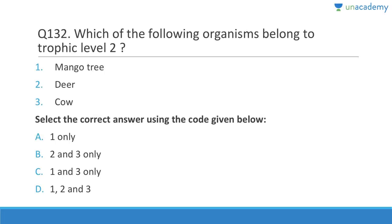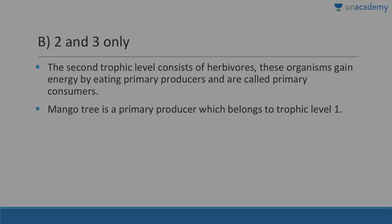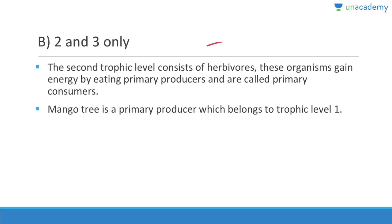Question 132: Trophic level two includes herbivores — zooplankton, cows, buffaloes — which are directly dependent on primary producers. Mango tree is a producer (trophic level one). Insectivorous plants may reach trophic level three. Answer is two and three. The second trophic level consists of herbivores (primary consumers or secondary producers).